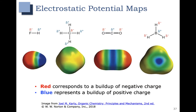These are some examples of electrostatic potential maps, which show how the overall charge is distributed in a molecule. Red represents a buildup of negative charge or delta-minus, and blue represents a buildup of positive charge or delta-plus. Looking at HF, the fluorine is the negative end corresponding to red, and hydrogen is the positive end. For methane, the hydrogens with delta-plus correspond to the greener areas showing more positive buildup.